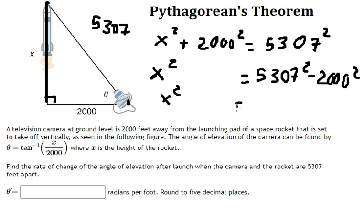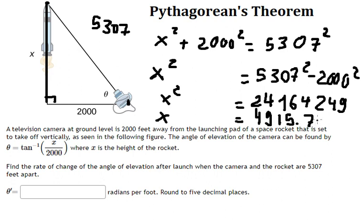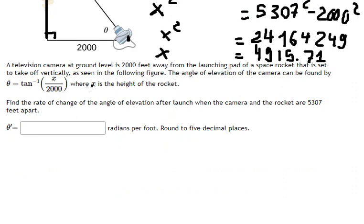So we calculate this and we have 24,164,249. Later we take the square root of both sides and we have x equals 4,915.71.